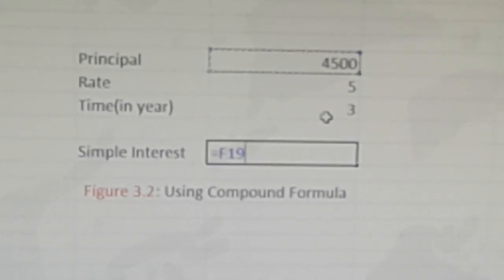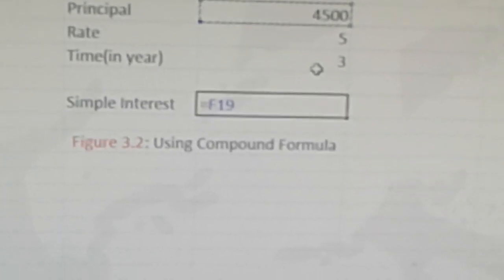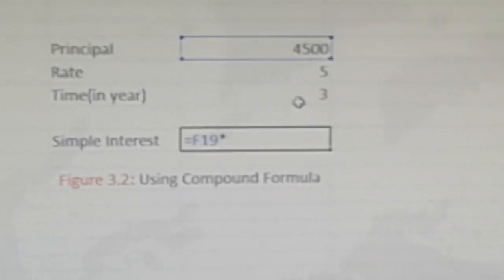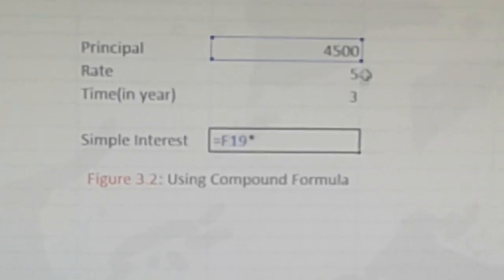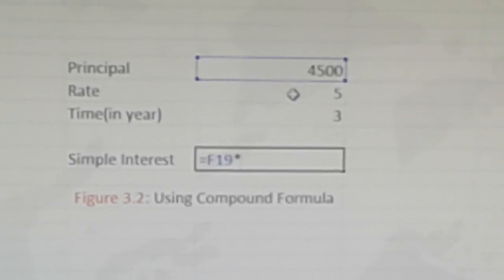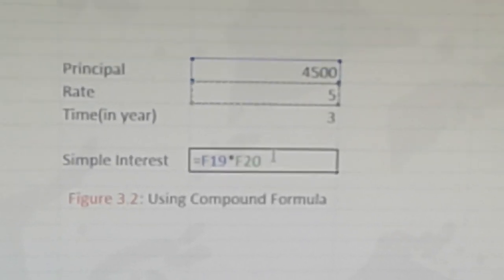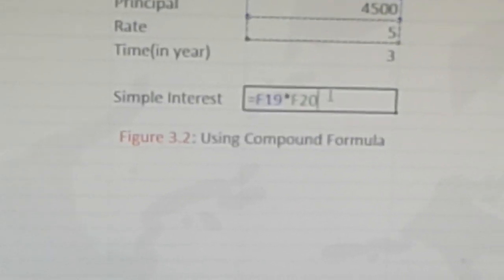Now we click on the rate cell, then again press the asterisk.